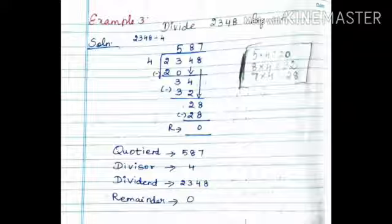Next subtract. 28 minus 28. Subtract 8 minus 8. Subtract 0. Remainder value is 0. Quotient is 587, divisor is 4, dividend is 2348 and the remainder value is 0.